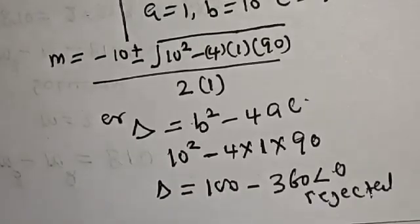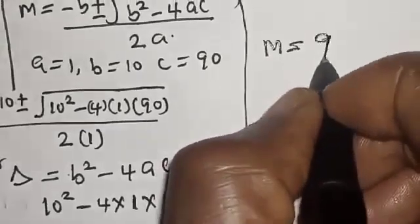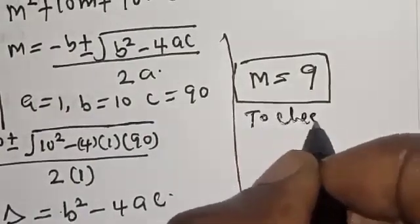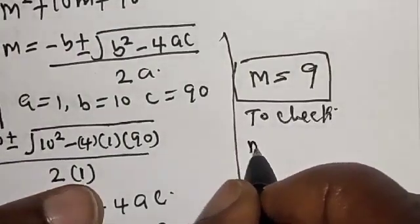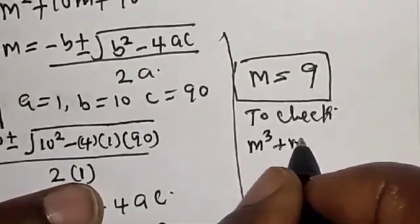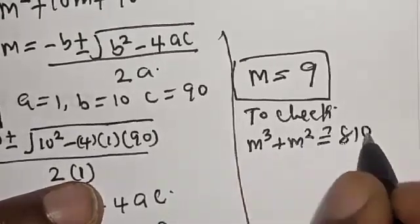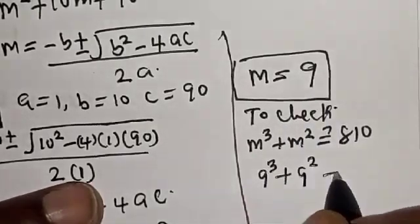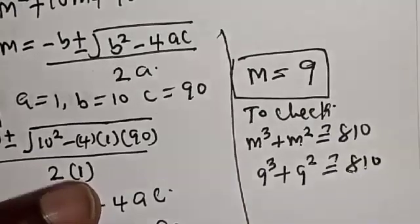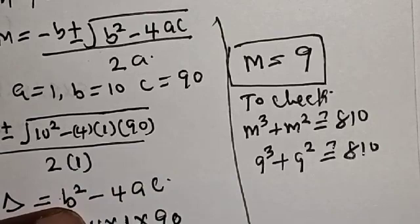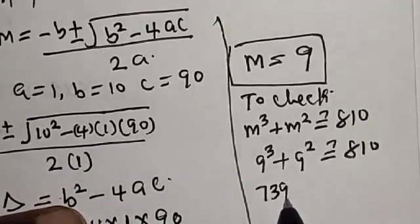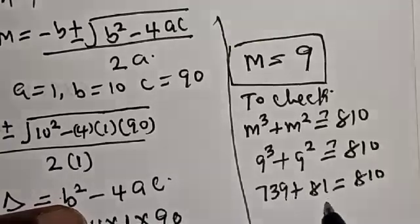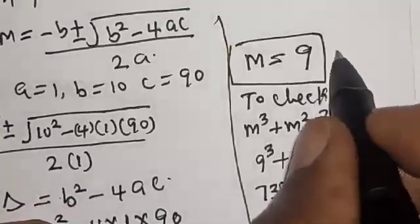The only solution we have is m is equal to 9. We can check to confirm: the given equation is m³ plus m² must equal 810. At m equal to 9, we have 9³ plus 9² must equal 810. 9³ is 729 plus 81, which equals 810. We satisfy the given equation at m equal to 9.